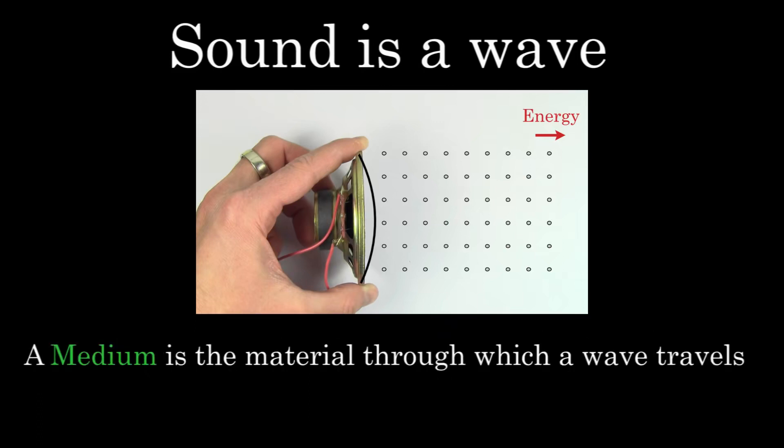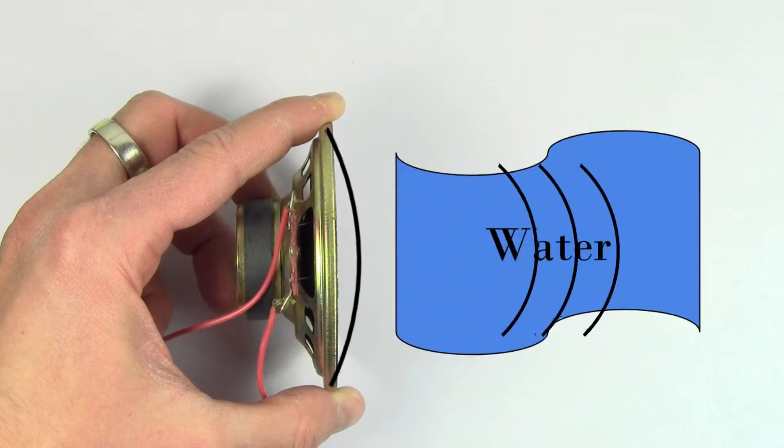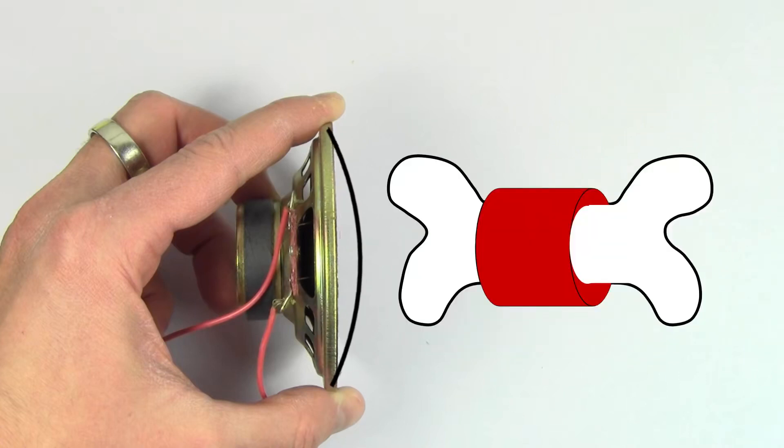Medium is a fancy word for the material or substance through which a wave is traveling. Air is typically the medium for situations involving sound waves, but sound waves can travel through all kinds of different materials, like water, metal, or even human flesh and bone.